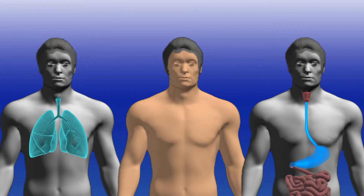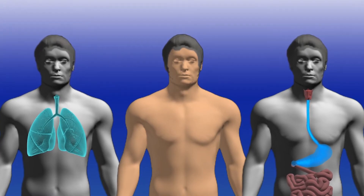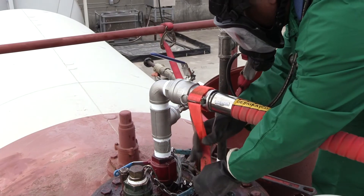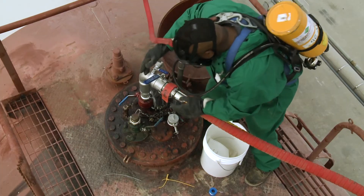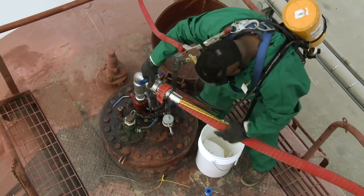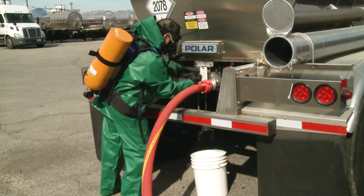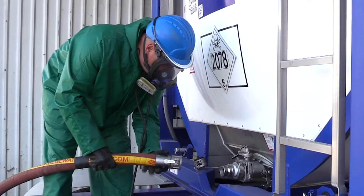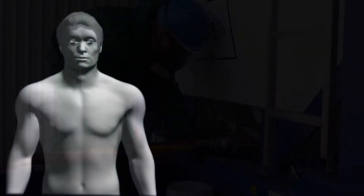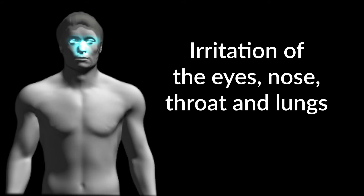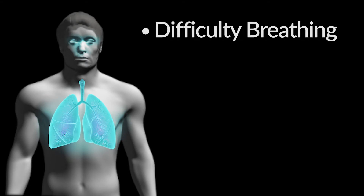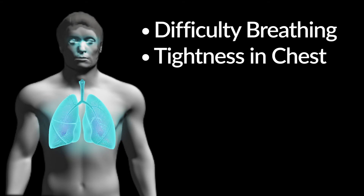If overexposure by any route occurs, seek immediate medical attention. The most significant health hazard of TDI is the potential for adverse effects on the respiratory system. At room temperature, TDI can form vapor concentrations above the permissible exposure limit. Exposure to TDI vapor may cause irritation of the eyes, nose, throat, and lungs. Difficulty breathing, tightness in the chest, and coughing are also symptoms of overexposure. In most cases, these symptoms will disappear within a few hours after the exposure takes place.